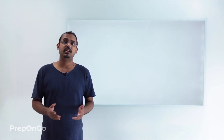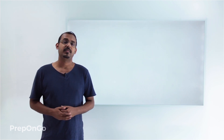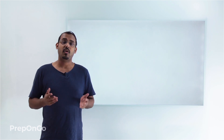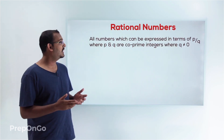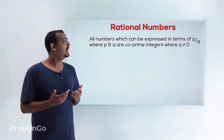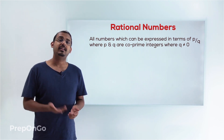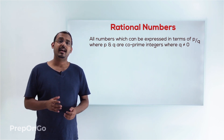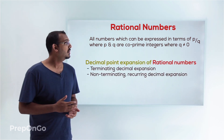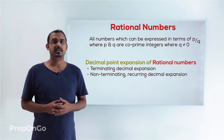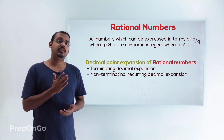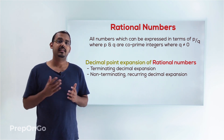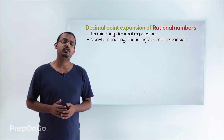Now let's move on and try to study something about rational numbers. In our previous classes we have studied that rational numbers are all numbers which can be expressed in the form of P upon Q, where P and Q are co-prime numbers and Q is not equal to 0. We have also seen that the decimal expansions of rational numbers are of two different types — we either get a terminating decimal expansion or a non-terminating but recurring decimal expansion. So let me ask you a question here.